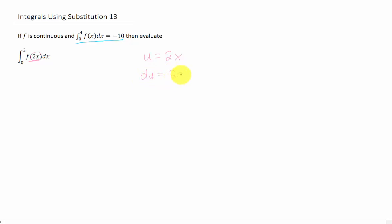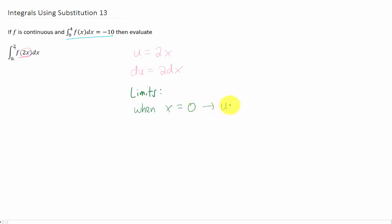We get du equals 2 dx. And as far as the limits of integration are concerned, when x equals 0, that would make our u equal to 2 times 0, or 0.